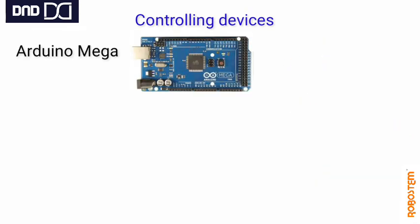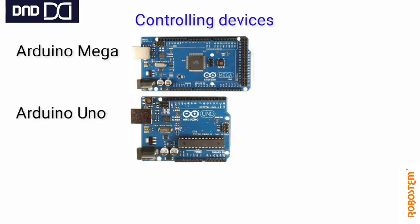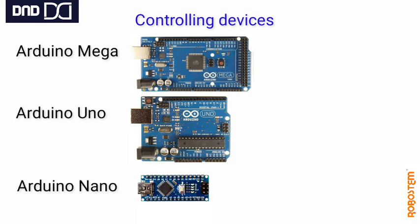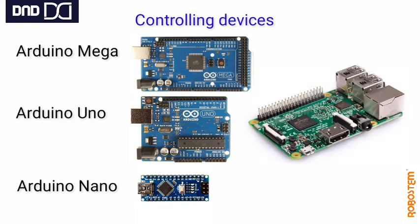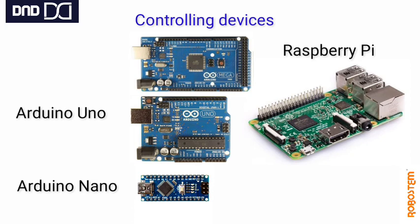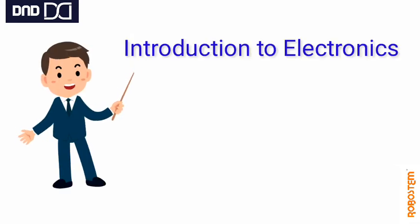Coming to the controlling devices — we have in our lab the Arduino Mega, Arduino Uno, and Arduino Nano. According to size the names are: Mega means big, Uno means intermediate, and Nano means small. The last one is the Raspberry Pi, which is a very advanced platform with many functions. That is just an introduction to the electronics components we have in our lab.